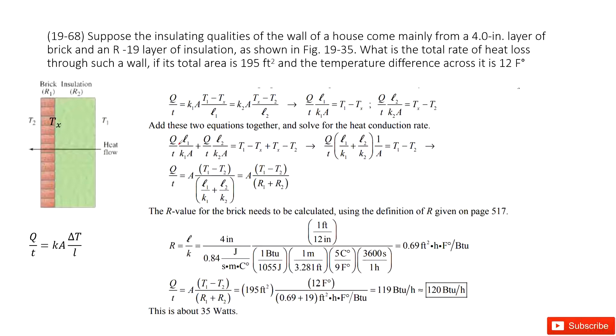We consider the insulating qualities of the wall of the house. It tells us the thickness is a 4-inch layer of brick and R19 layer of insulation. We need to find the total rate of heat loss through such a wall if the total area is 195 feet squared and the temperature difference is given.